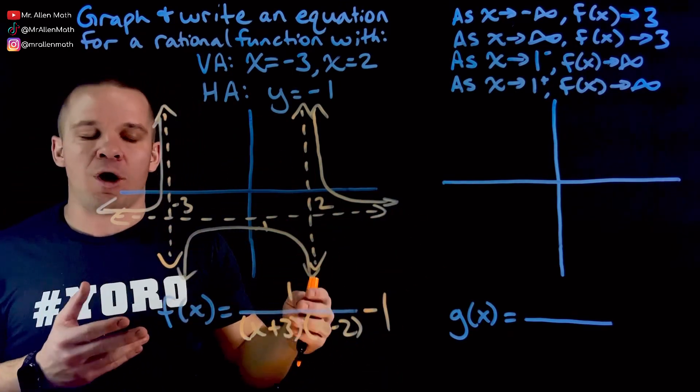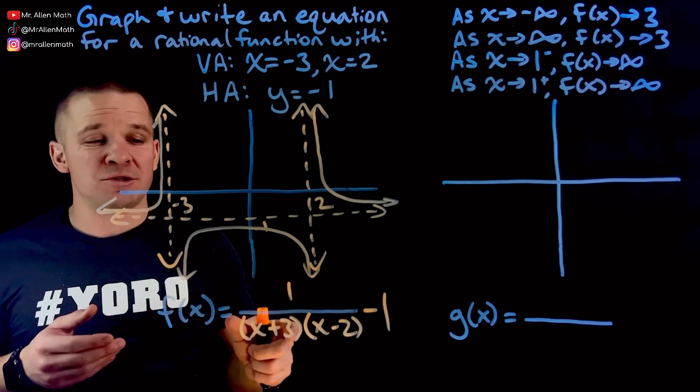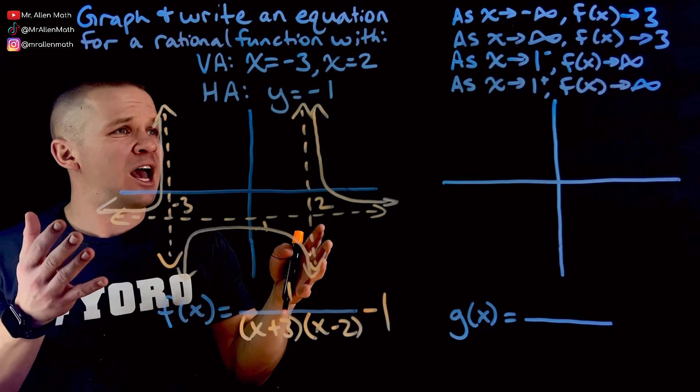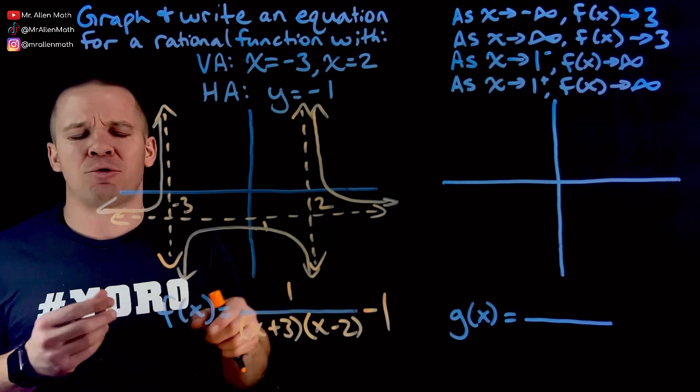So usually you'd have a horizontal asymptote here at y equals zero. That's going to shift it down one, and now we have it at negative one. You can also do that with adding different parts into your numerator here, but we're going to go this route on this one. And maybe in another video I'll change it up because I'm crazy like that.